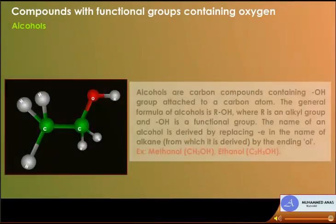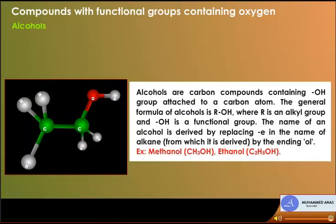Alcohols are carbon compounds containing an OH group attached to a carbon atom. The general formula of alcohols is ROH, where R is an alkyl group and OH is the functional group. The name of an alcohol is derived by replacing the '-e' in the name of the parent alkane with the ending '-ol'. Examples: methanol (CH3OH) and ethanol (C2H5OH).